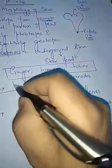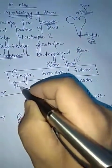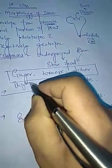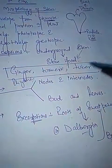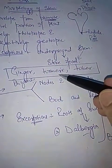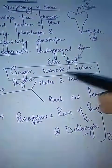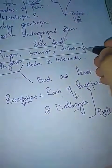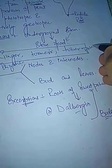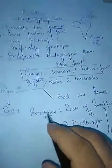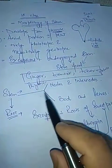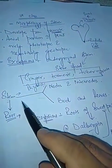Examples of underground stems that store food include ginger, which is an example of a rhizome that will be discussed in future, turmeric, and potato, which is an example of a tuber.